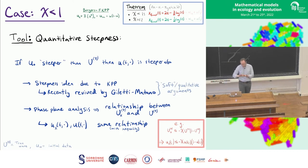So let's talk very quickly about chi less than one. Most of the talk will be about chi equals one. Chi less than one, once you have the right perspective, you can kind of do it relatively quickly. So there are two main ideas that we have here. The first is what we call quantitative steepness.